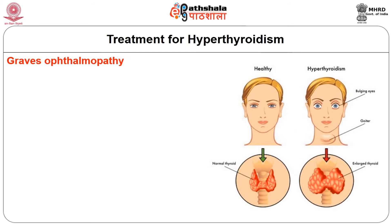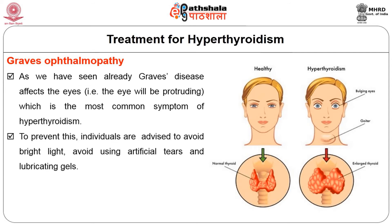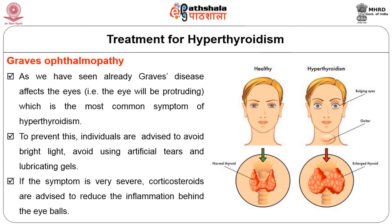Regarding Graves ophthalmopathy, as mentioned earlier, Graves disease affects the eyes — the eyeballs will be protruding, which is a common symptom. To prevent this, individuals are advised to avoid bright light and avoid using artificial tears and lubricating gels. If the symptom is very severe, corticosteroids are advised to reduce inflammation behind the eyeball.